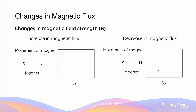Let's go through some visual examples. If we have a rectangular coil and we move a bar magnet towards the coil, the coil will experience an increase in magnetic flux, because the proximity of the bar magnet determines the flux density passing through the coil. The closer the bar magnet is, the higher the strength of the magnetic field. Vice versa, if the bar magnet is moved away from the coil, the flux density experienced by the coil will decrease, resulting in a decrease in magnetic flux.